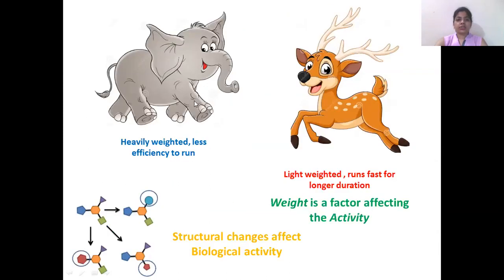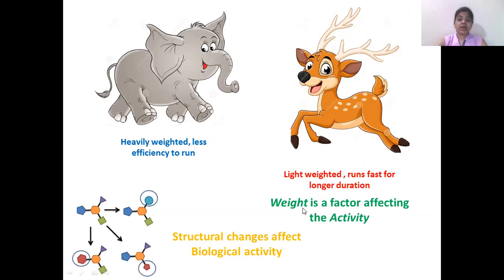Here, two animals are shown. The elephant is a heavy-weighted animal with less efficiency to run, while the deer is a light-weighted animal that runs faster. The aim of showing these pictures is to illustrate the relationship between structure and activity. Due to heavy weight, the elephant cannot run fast, while the deer, being light-weighted, can run faster. So the weight of the animal is a factor that affects the activity — that is, the running activity.